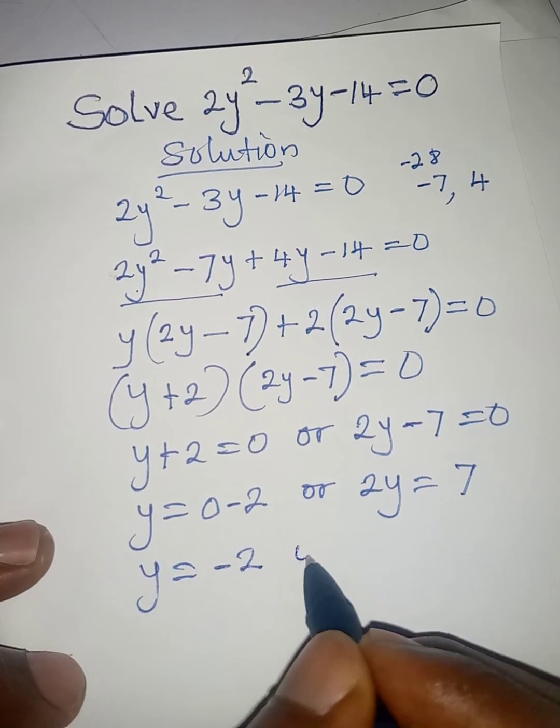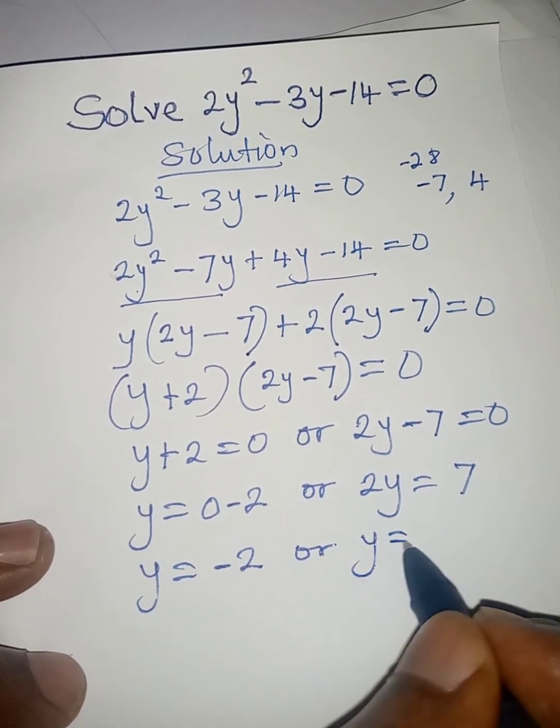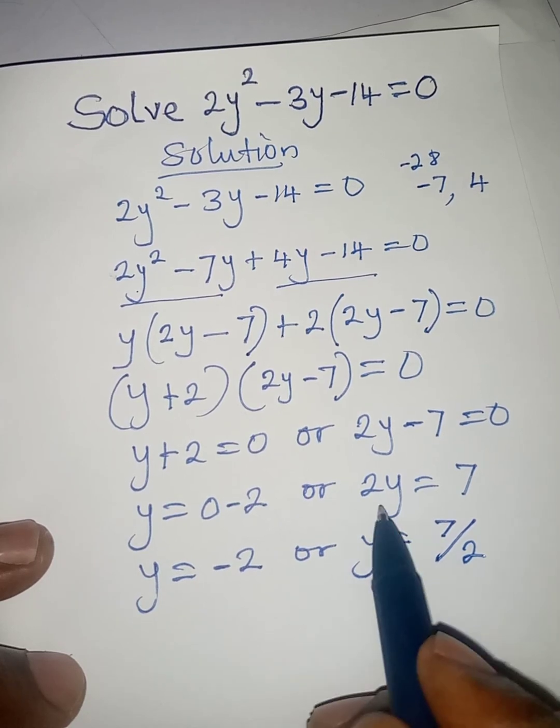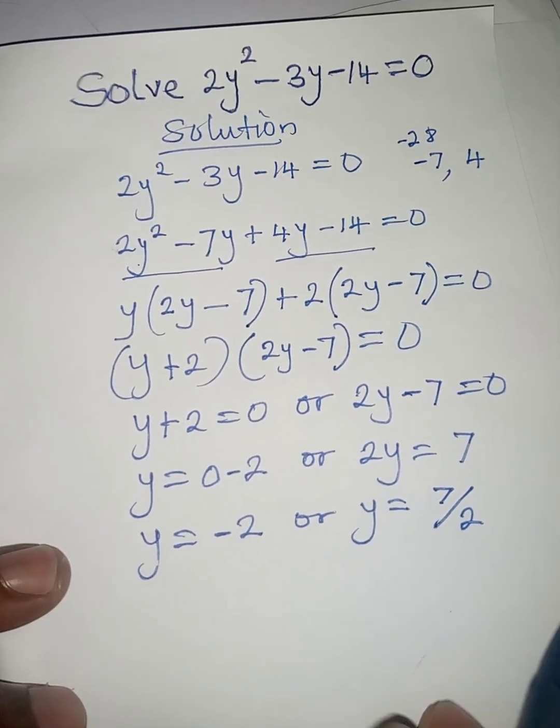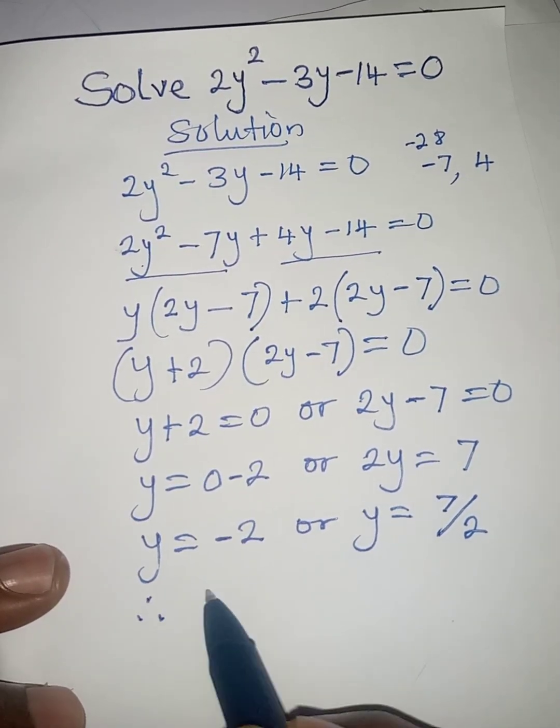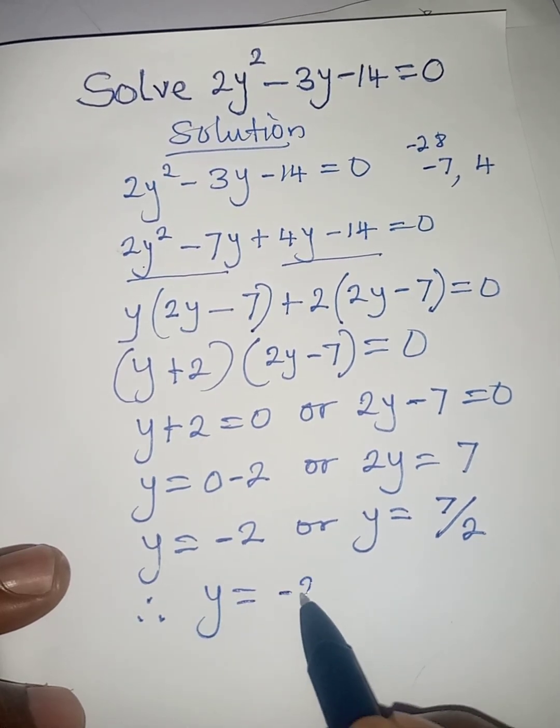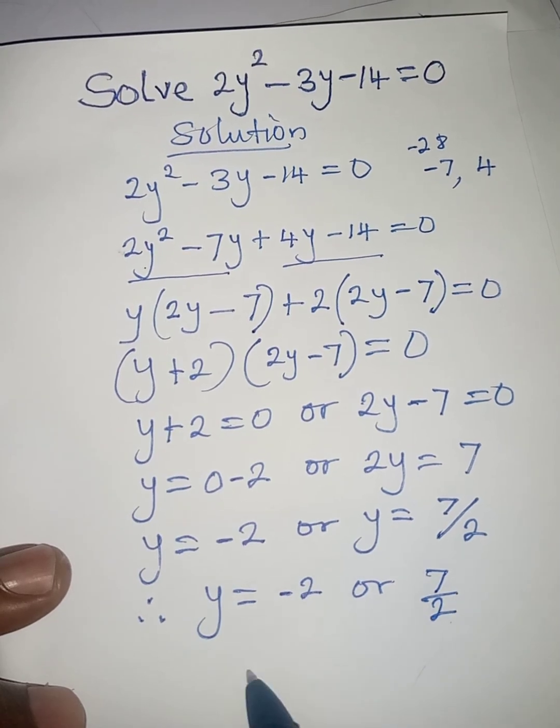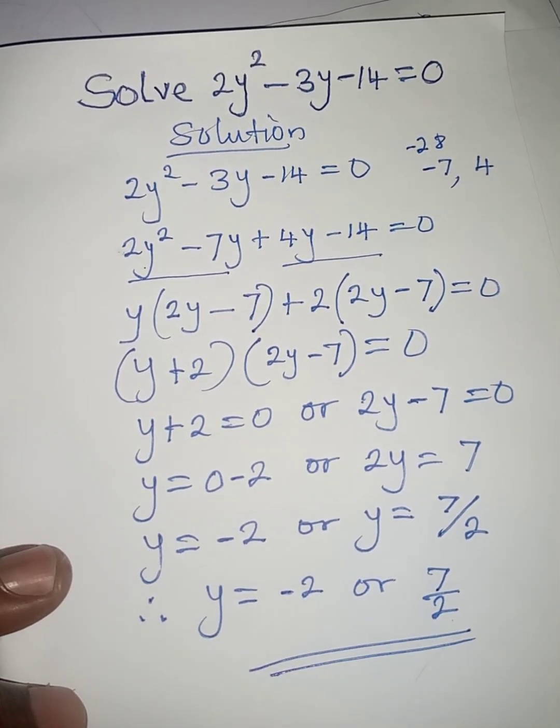7 over 2 by dividing both sides by 2. So therefore, we can now say that y is equal to minus 2 or 7 over 2. So these are the values of y.